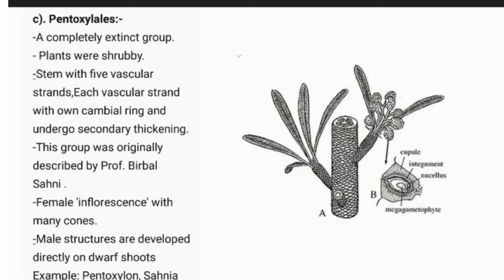Pentoxylales is the third order of class Cycadopsida — a completely extinct group. Plants were shrubby, meaning they produced branches but had no trunk. The stem has five vascular strands, each with one cambial ring undergoing secondary thickening. This group was originally described by Professor Birbal Sahni of India. On screen you can see the stem image showing five vascular strands.